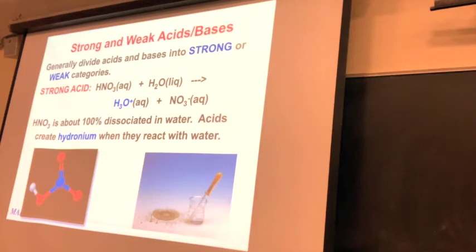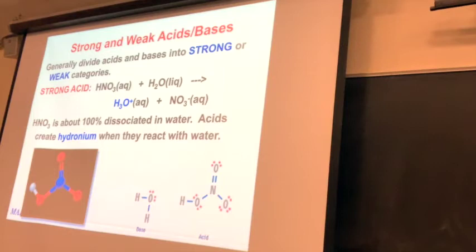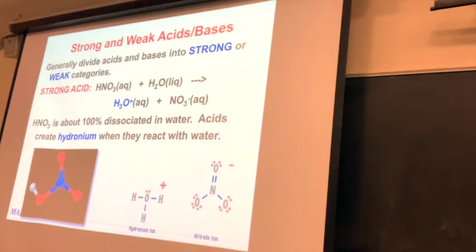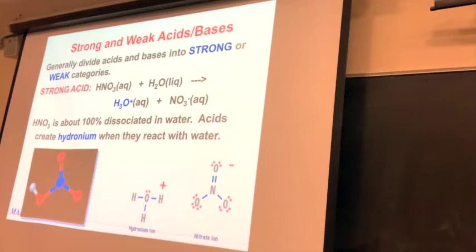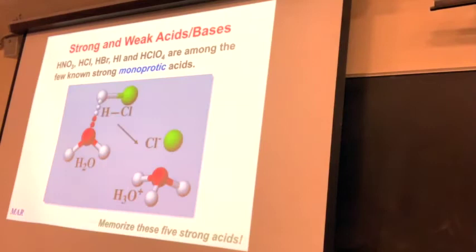Strong acids and strong bases are fun to demonstrate with videos because they explode and make lots of cool things. The acids do need water to react for our purposes, and hydronium, H3O+, is going to be a big player in what an acid is. When nitric acid, HNO3, encounters a water molecule, it forms an acidic solution by donating a proton, the H+ ion, to the water to form a hydronium ion and a nitrate ion. Nitrate is a very stable polyatomic ion, and hydronium is formed in the process.